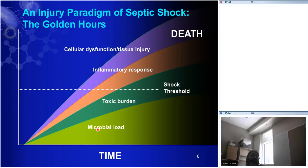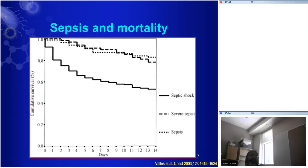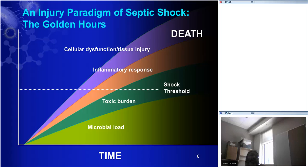Our job is to bring you below the shock threshold in a short enough time that you are not irreversibly committed to death. We simply ask: what is the driver of hemodynamic instability in septic shock? This model tells you: it's the microbial load. Your job is to reduce the organism load in a short enough time that you haven't passed the golden hour and have a shot at making it.